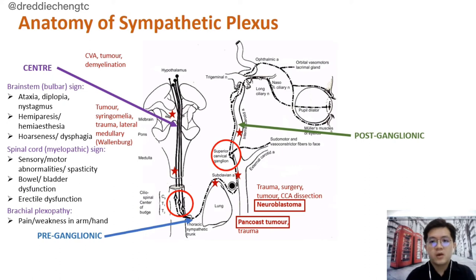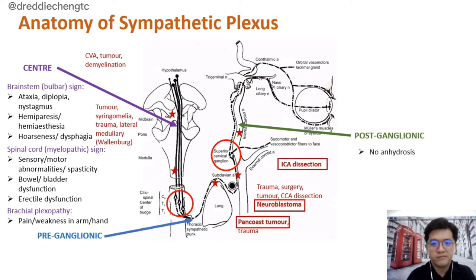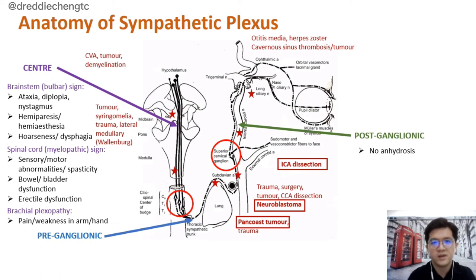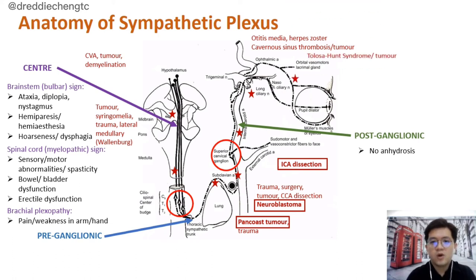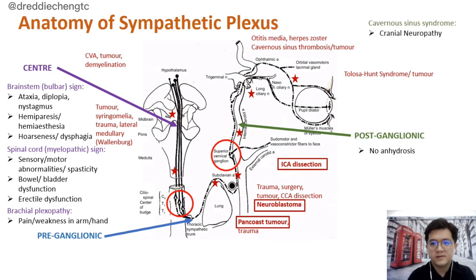For the postganglionic neuron, if a patient presents with a sudden onset painful Horner's Syndrome, we should suspect an internal carotid artery dissection. Postganglionic Horner's can also be caused by any lesion over the middle ear or a cavernous sinus lesion. Middle ear lesions include otitis media or herpes zoster infections. Pathology over the cavernous sinus can be due to cavernous sinus thrombosis or a tumor. If the lesion is over the orbit, it can be due to Tolosa-Hunt syndrome or a retrobulbar tumor behind the globe.